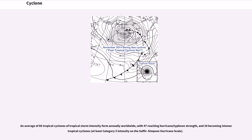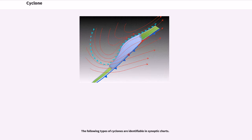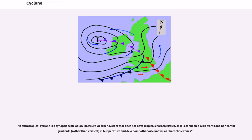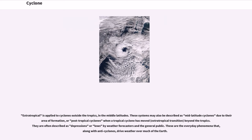The following types of cyclones are identifiable in synoptic charts. There are three main types of surface-based cyclones: extratropical cyclones, subtropical cyclones, and tropical cyclones. An extratropical cyclone is a synoptic-scale low-pressure weather system that does not have tropical characteristics, as it is connected with fronts and horizontal gradients in temperature and dew point, otherwise known as baroclinic zones. Extratropical is applied to cyclones outside the tropics, in the middle latitudes. These systems may also be described as mid-latitude cyclones, or post-tropical cyclones when a tropical cyclone has moved through extratropical transition beyond the tropics. They are often described as depressions or lows by weather forecasters and the general public.